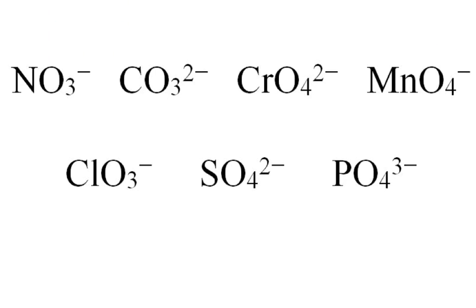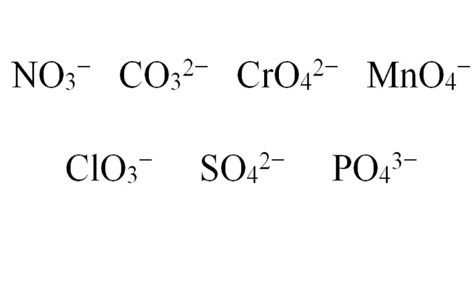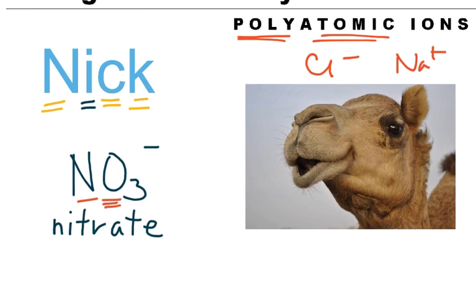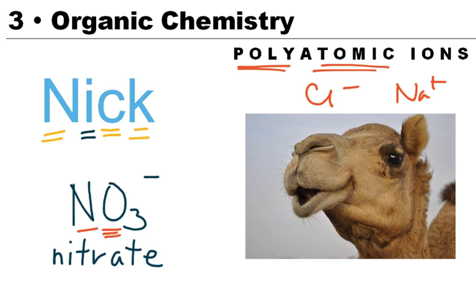Now there are several of the polyatomic ions, and you have to memorize those. So there's nitrate, carbonate, chromate, permanganate, chlorate, sulfate, phosphate, and there's a couple of other ones as well. So we're going to use a mnemonic to kind of help this, and it's something I've learned on the internet. And so we're going to take words, we have a phrase.